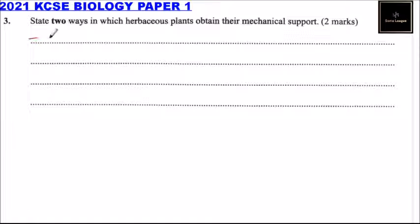One of the ways is twining — that is, twining around other plants.